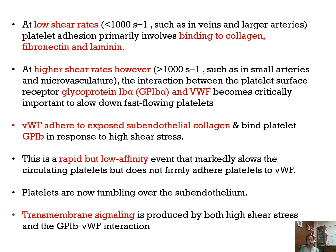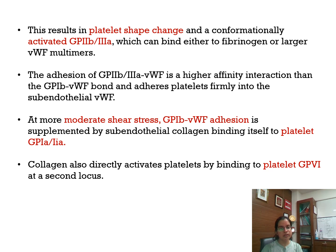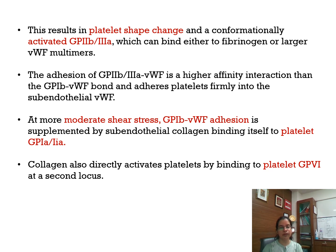The interaction between von Willebrand factor and GP1B is a rapid but low-affinity event — it slows the platelet but does not firmly adhere it. Platelets are tumbling over the subendothelium; this is tethering. Transmembrane signaling produced by both higher shear rates and this interaction results in platelet shape change and a conformationally activated GP2B3A, which binds to fibrinogen or larger von Willebrand factor multimers, causing firm adhesion. GP2B3A to von Willebrand factor is a higher-affinity interaction than the GP1B–von Willebrand factor bond. At moderate shear stress, GP1B–von Willebrand adhesion is supplemented by GP1A and platelet GP2B3A receptors.